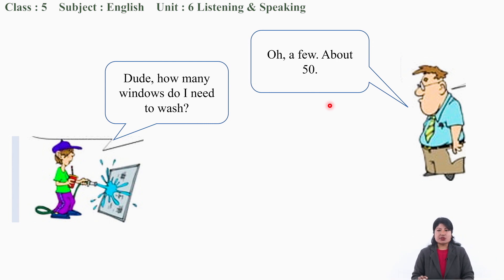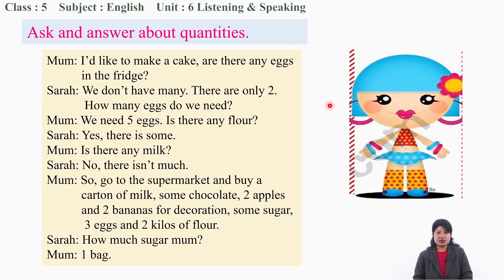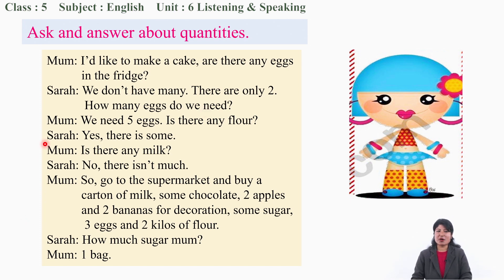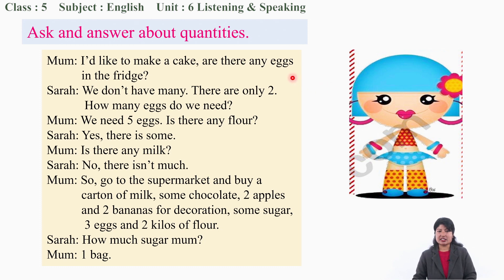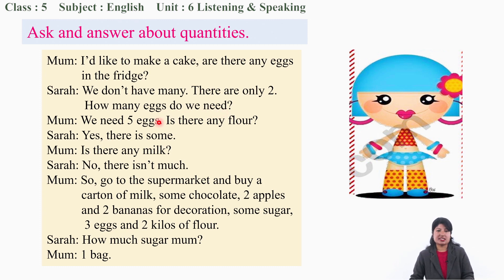One more conversation. You can practice with your friend or maybe at home with your mom. This is a conversation between Mom and Shara. Mom says: 'I would like to make a cake. Are there any eggs in the fridge?' Shara replies: 'We do not have many. There are only two.' Mom asks: 'How many eggs do we need?' Shara says: 'We need five eggs. Is there any flour?' Mom: 'Yes, there is some.'